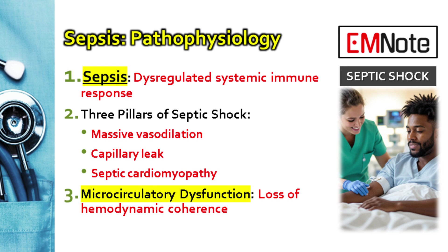Second is capillary leak. The lining of the blood vessels gets damaged and leaky, so fluid pours out into the tissues. Patients get intravascularly volume-down even if they look swollen overall. Third, we have septic cardiomyopathy. The heart muscle itself gets temporarily stunned and depressed, dropping cardiac output and adding a cardiogenic piece to the puzzle. So you've got wide pipes causing low pressure, fluid leaking out, and maybe a weak pump too.